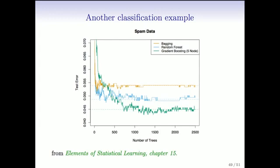Another example: the spam data from our earlier book, chapter 15 — a two-class problem with about 50 predictors. A single tree is really not very good; we've even truncated the scale because it goes above 7%. Bagging levels off at around 5.5%. Random forest, using the default square root of P as the number of predictors selected at every node, reduces that by about half a percent. Boosting with five-node trees gets another maybe half percent. These two methods are quite good and comparable in performance. Visually the curves look quite different, but with proper statistical testing, they're not significantly different.